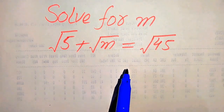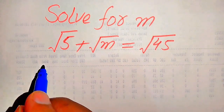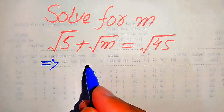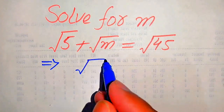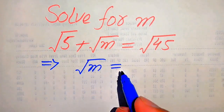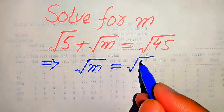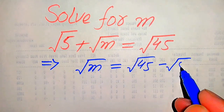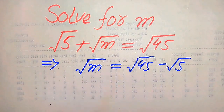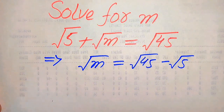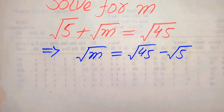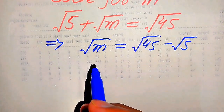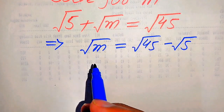So, here first we need to rewrite this equation. We first move the square root of 5 to the right hand side, and it will be written as square root of m equals square root of 45 minus square root of 5.